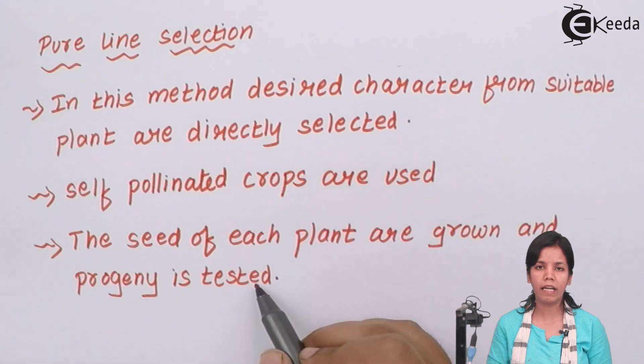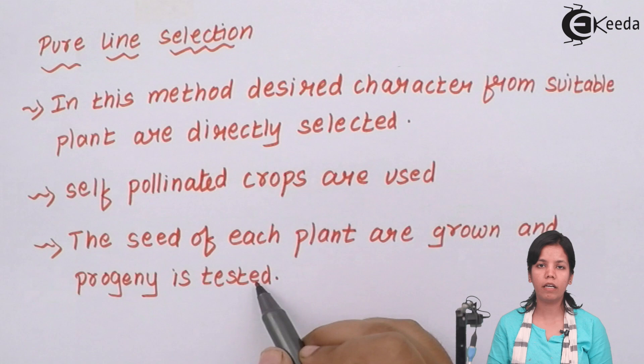Since you focus on one character the seed can be grown and the desirable character can be obtained in no time. This is the fastest method as compared to mass line selection.